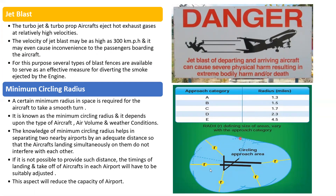The next characteristic is minimum circling radius. A certain minimum radius in space is required for the aircraft to take a smooth turn — for example, before landing, the aircraft will take a certain round and then come in to land. This is known as the minimum circling radius and it depends on the type of aircraft, air volume, and weather conditions. Knowledge of the minimum circling radius helps in separating two nearby airports by an adequate distance so that aircraft landing simultaneously do not interfere with each other.